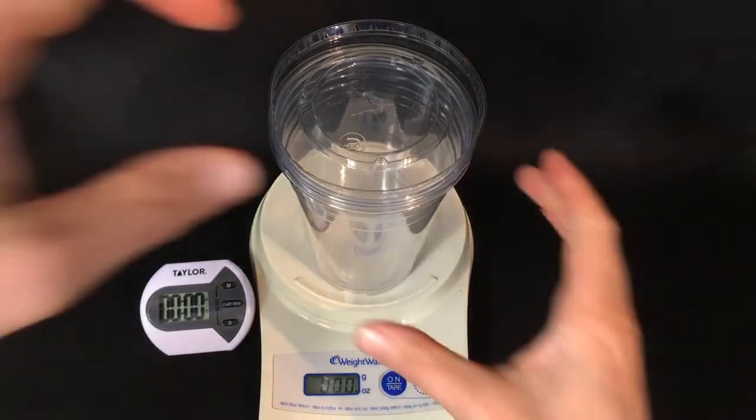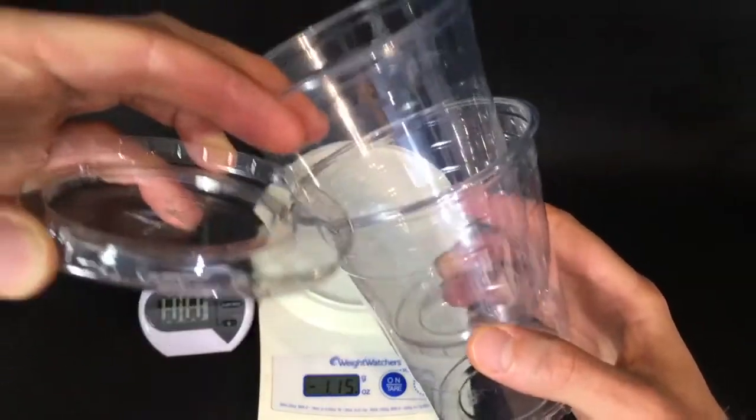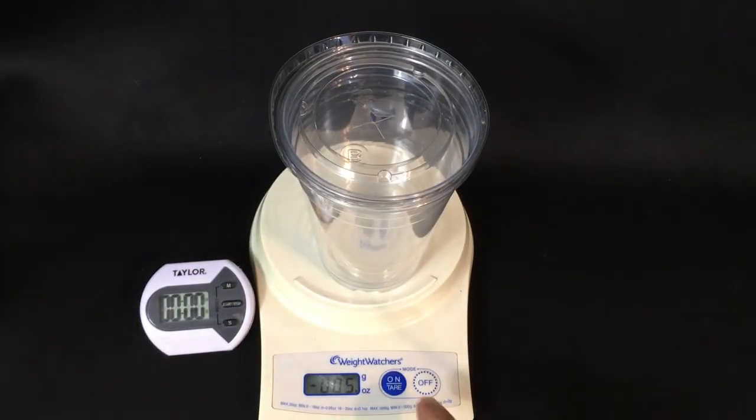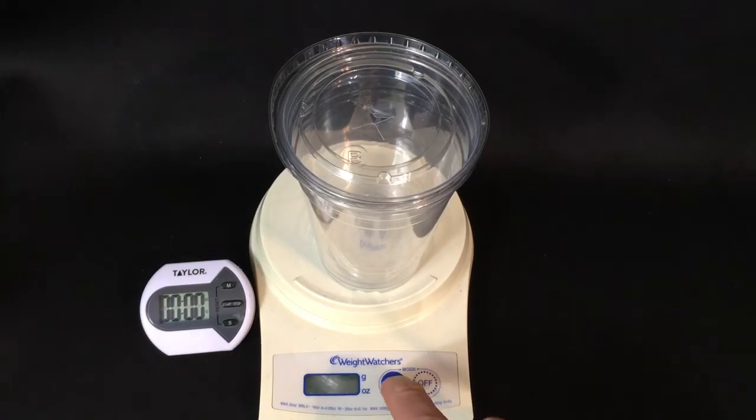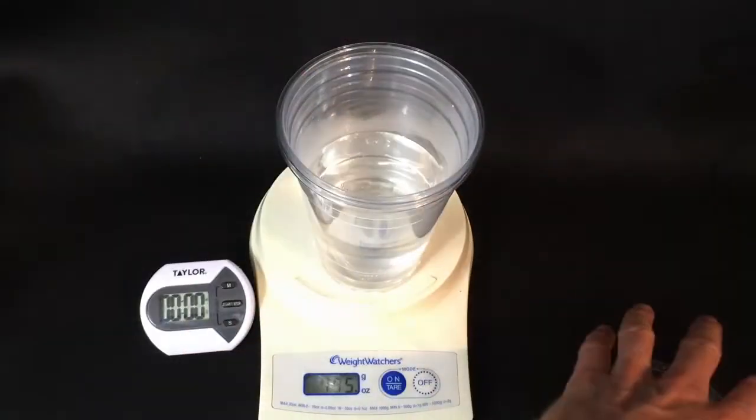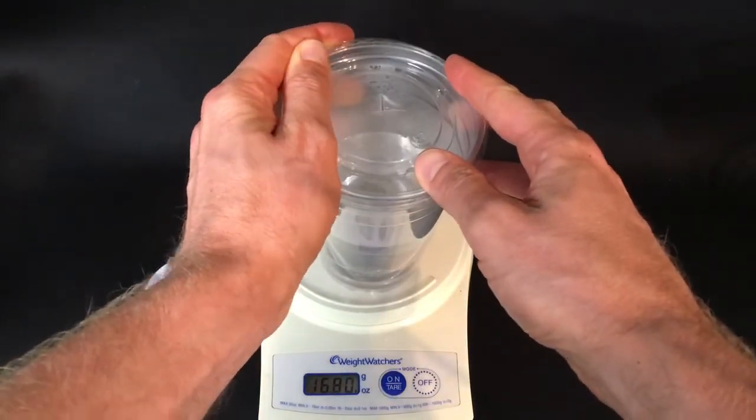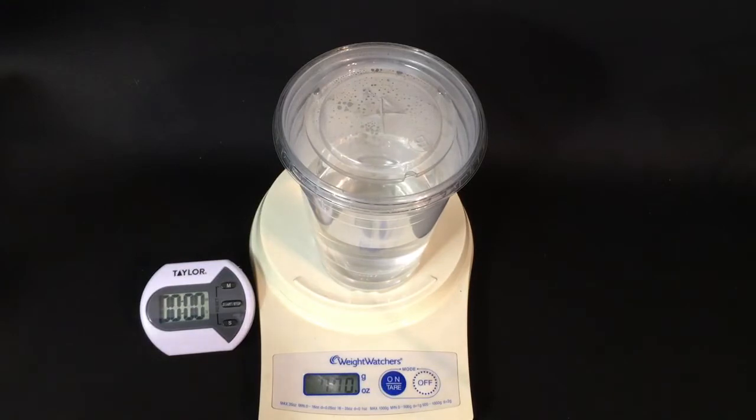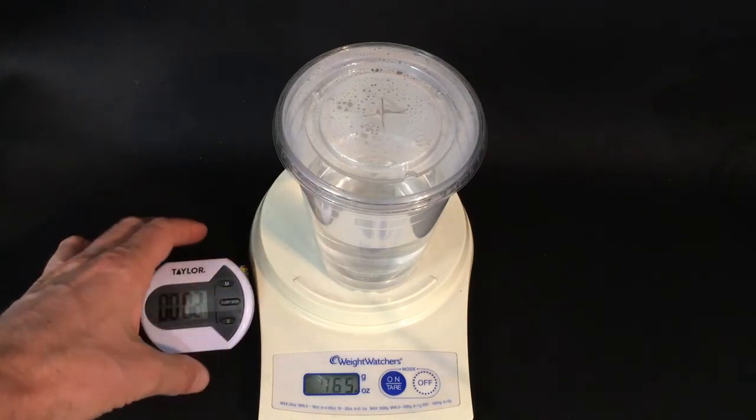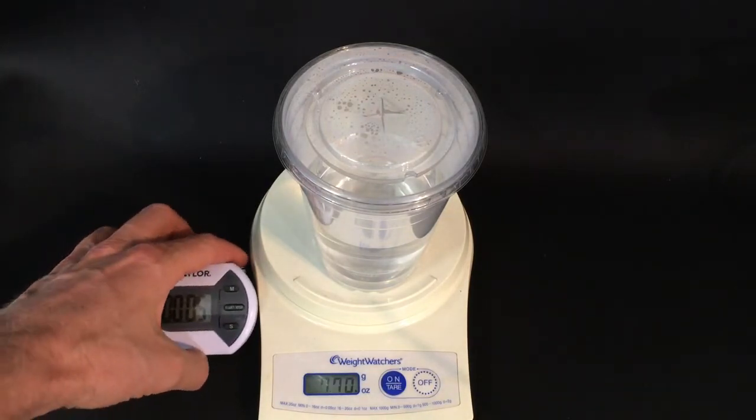Next we're going to measure a double cup, double layer cup with a lid. We can see that it is tared to zero. We'll pour the same amount of water, same temperature water in the cup. Put the lid on. Take our measurement. We are at 7.7 ounces. We'll start our timer and wait about 10 minutes.